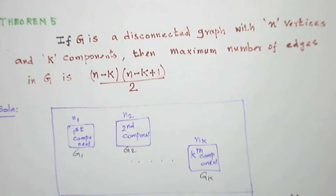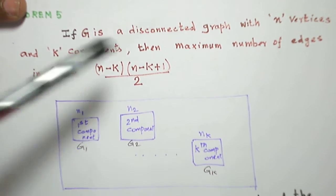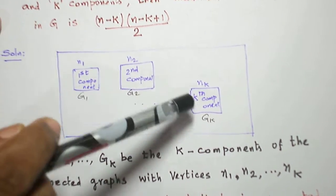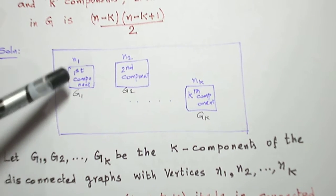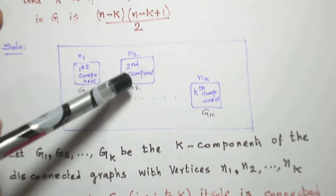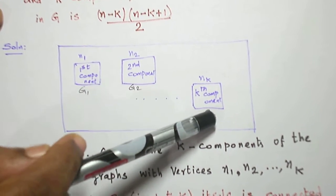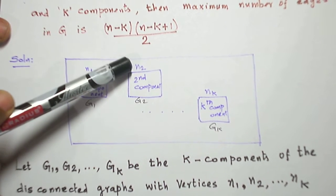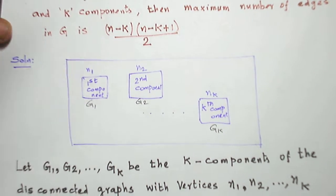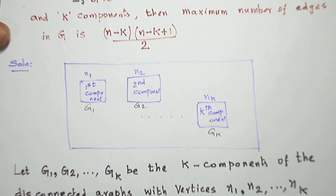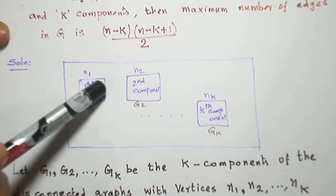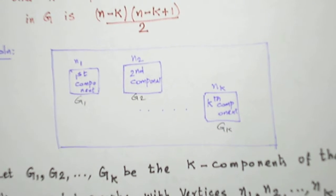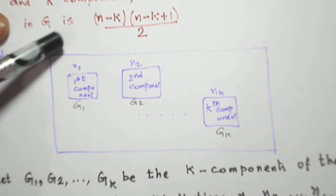Consider the whole graph which has k components: first component, second component, up to the kth component. I name them as G1, G2, up to Gk. The first component has n1 vertices, the second component has n2 vertices, and the kth component has nk vertices. There is no edge from one component to another — between components, there is no edge.